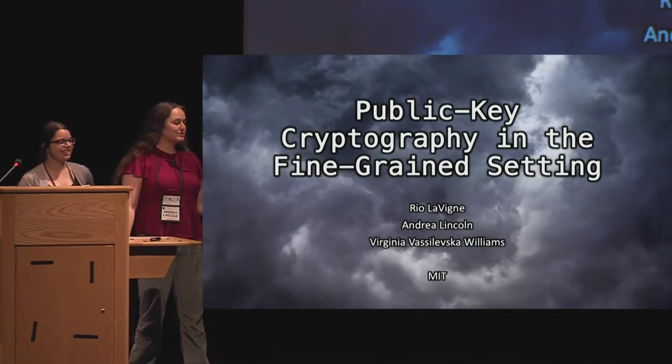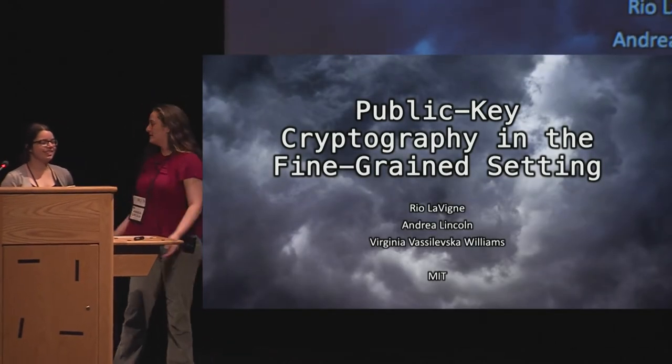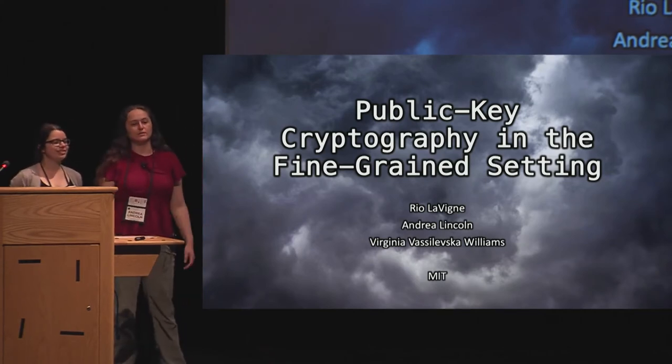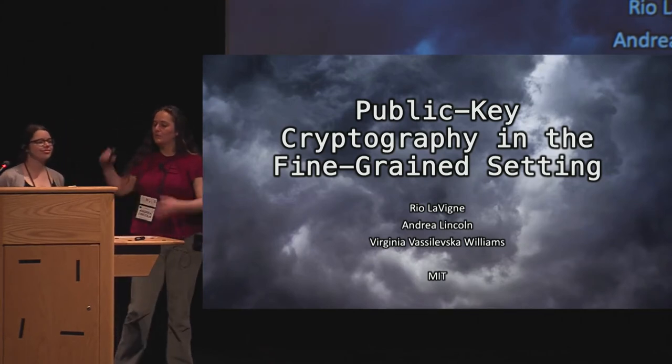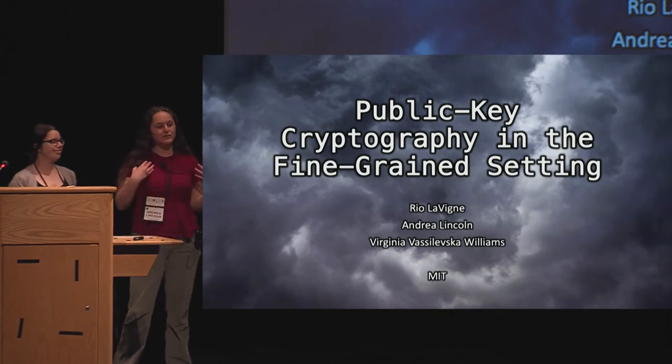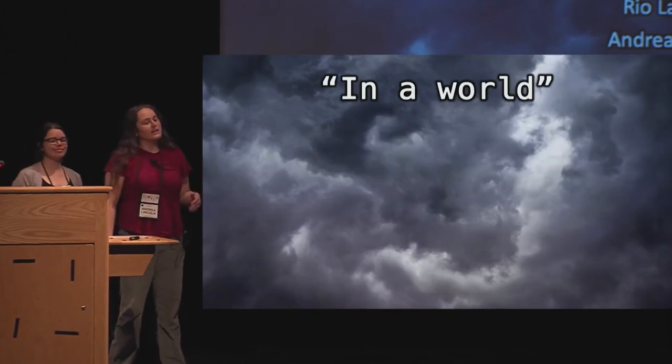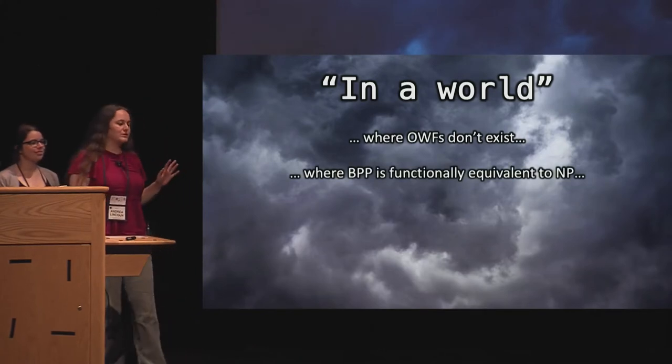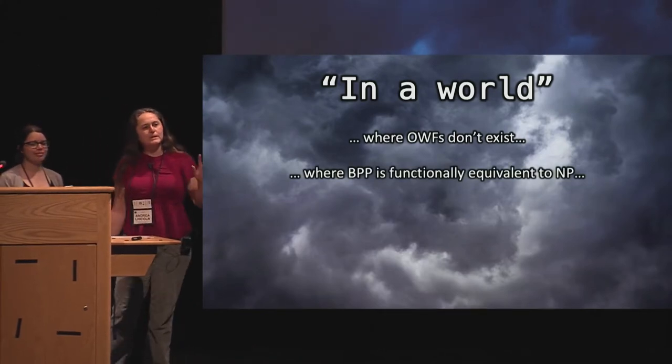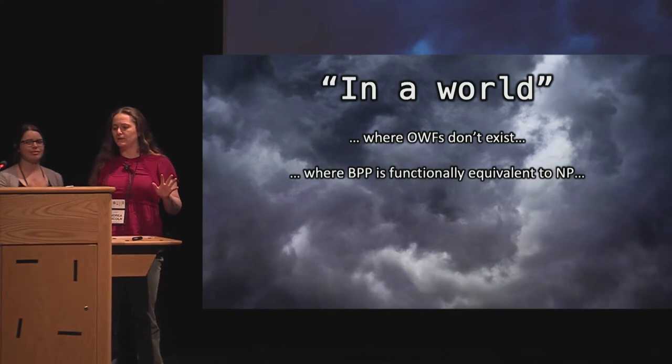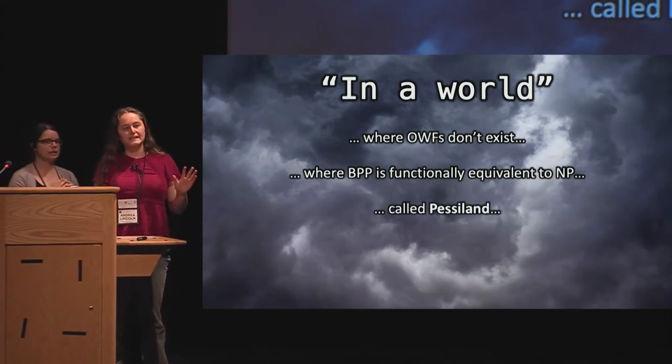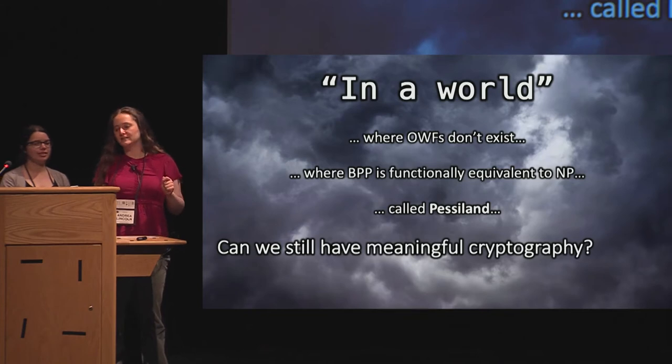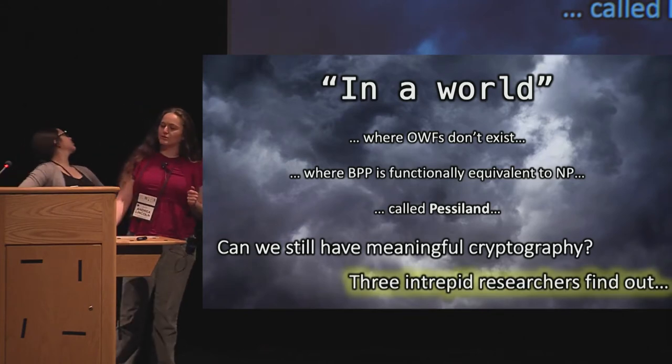Hi, my name is Andrea, and this is Rio, and this is joint work with Virginia Vasilevska-Williams. We're going to be talking about public key cryptography in the fine-grained setting. In a world where one-way functions don't exist, where BPP is functionally equivalent to NP, a world called Pesiland. Can we still have meaningful cryptography? Three intrepid researchers find out.